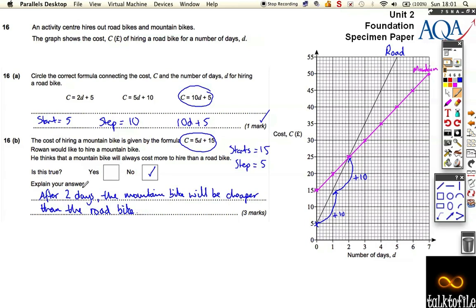How else do we know? You could have also said the mountain graph doesn't always stay above the road graph.